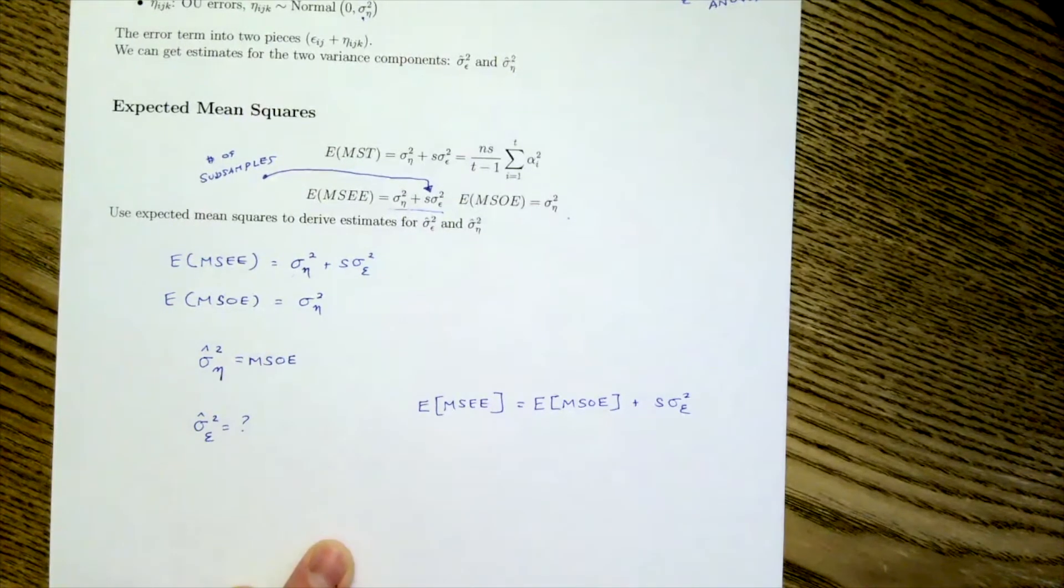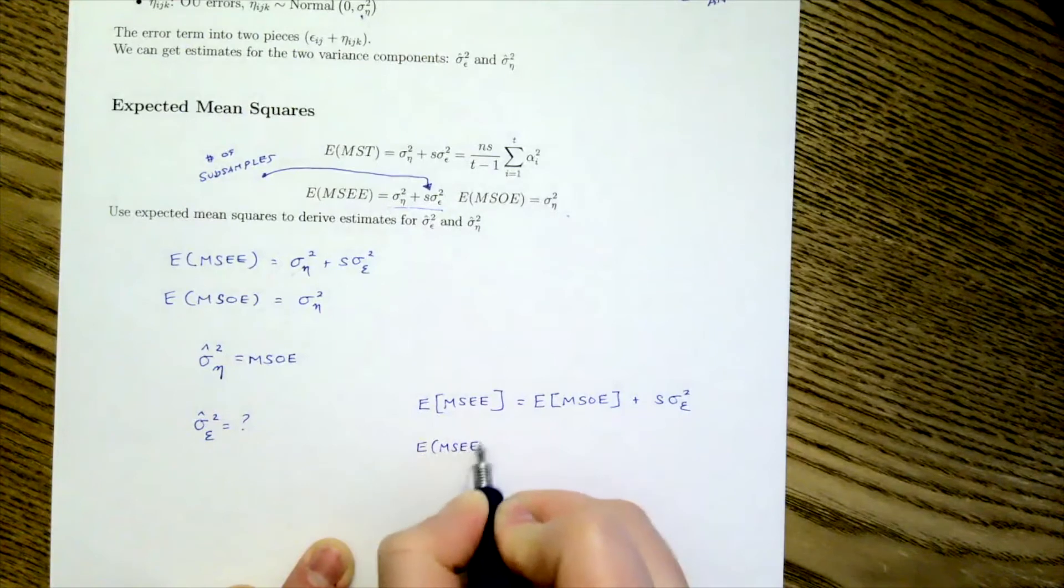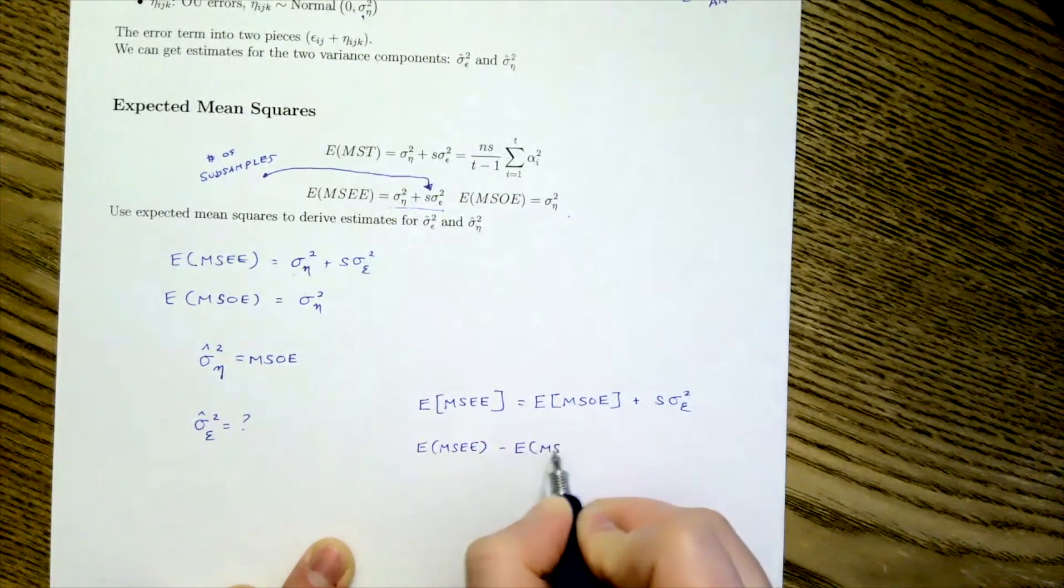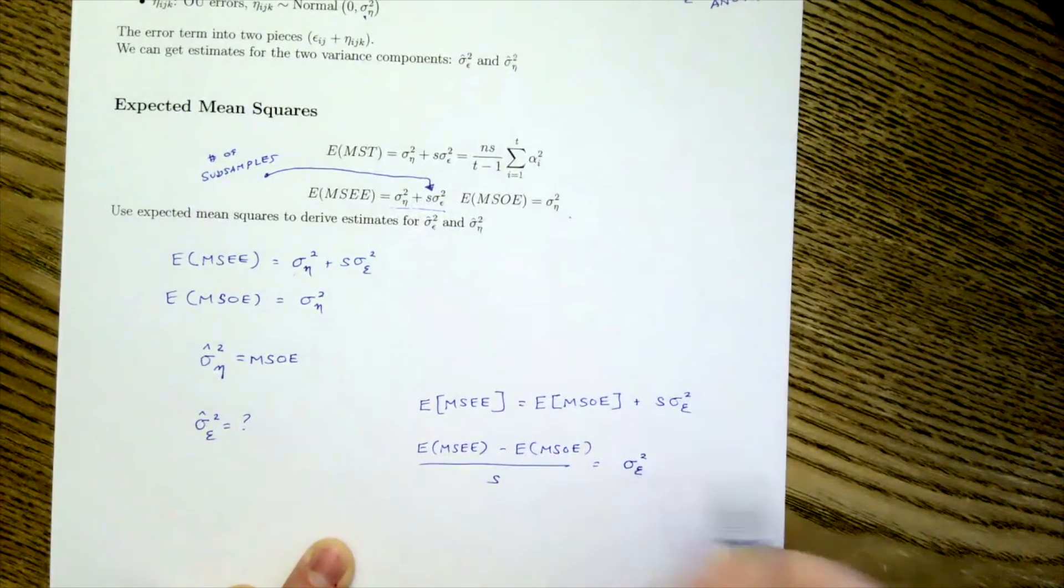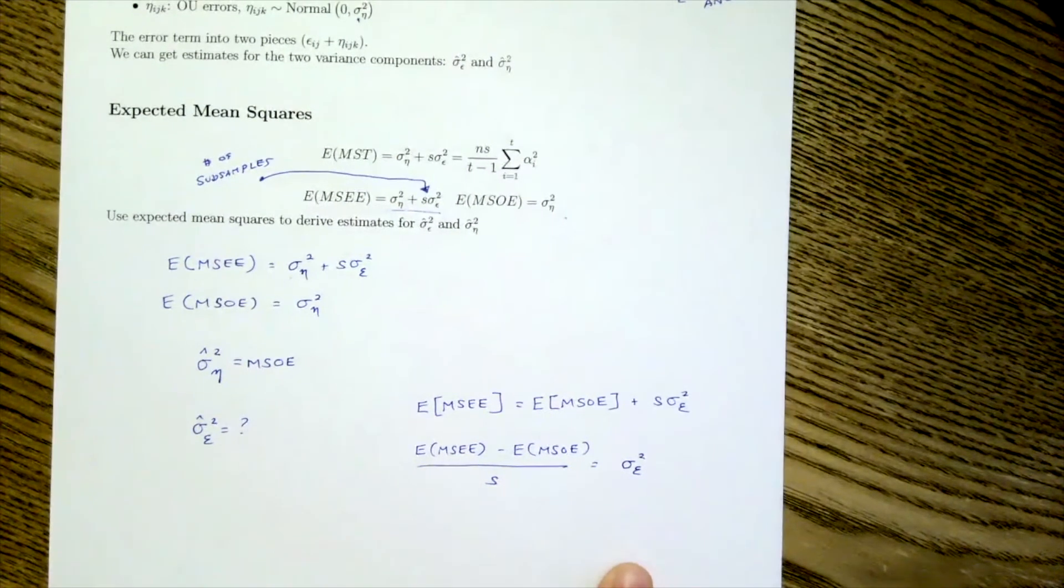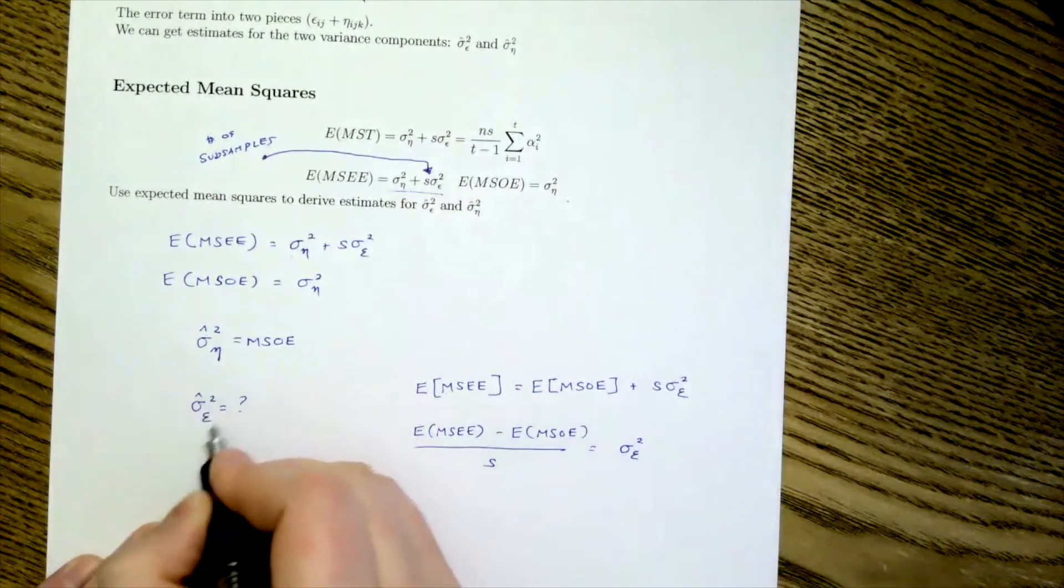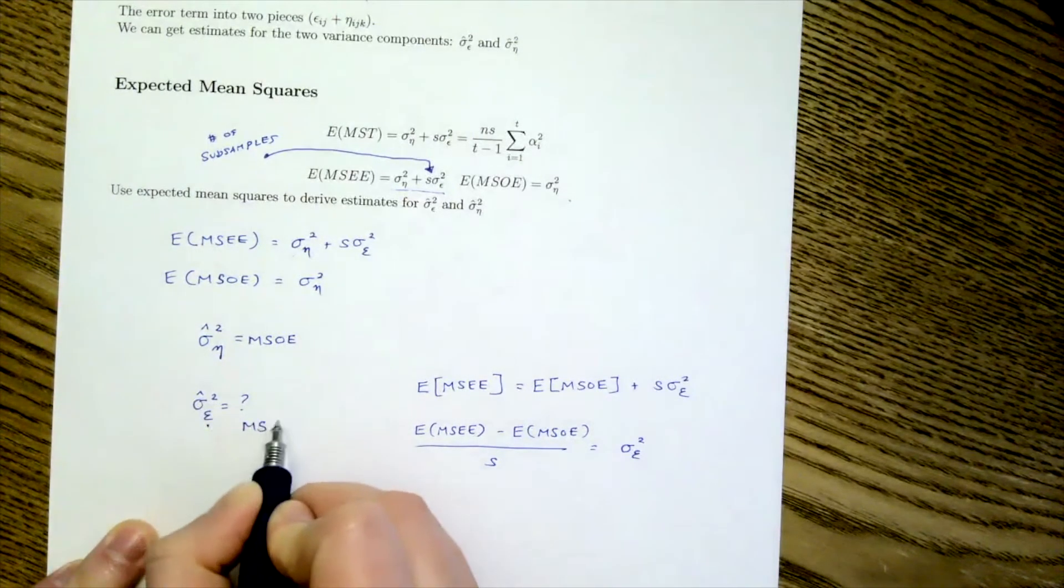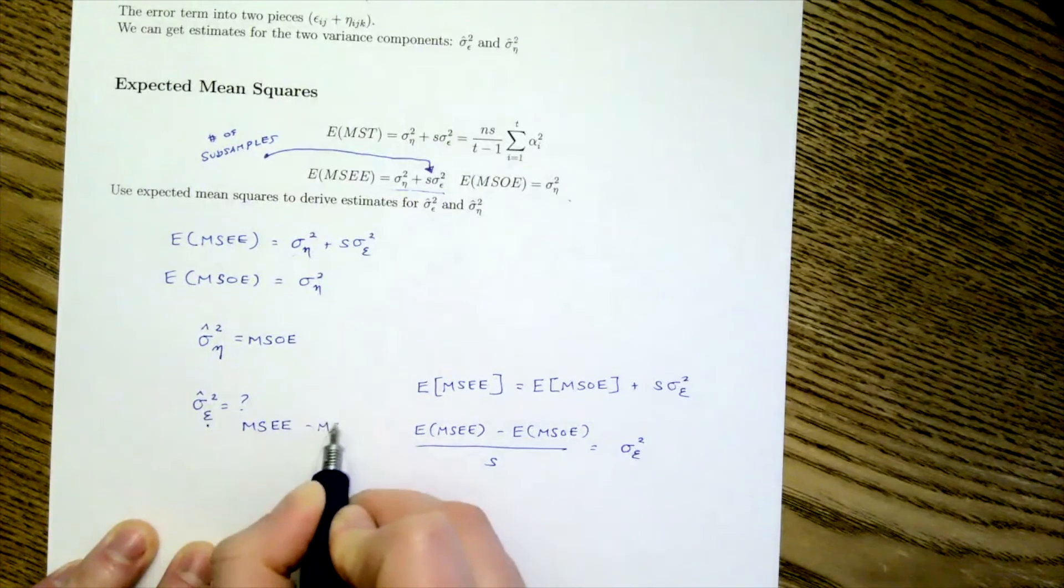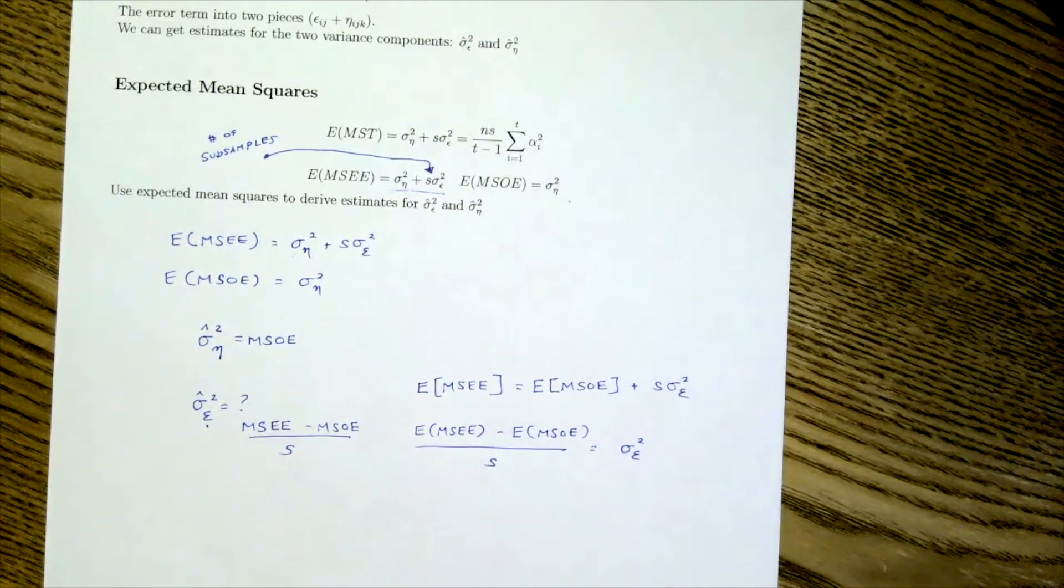So now after we can do some quick algebra and we can see that our expected MSEE minus the expected value of MSOE divided by S is sigma squared epsilon. Now if we drop our expected values, then we can see that our best estimate for sigma hat squared epsilon would be MSEE minus MSOE divided by our number of subsamples. And thus we have a variance estimate for experimental error.